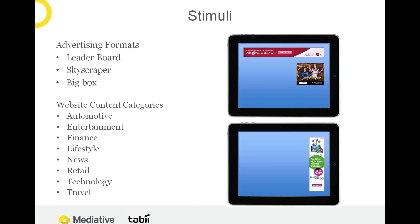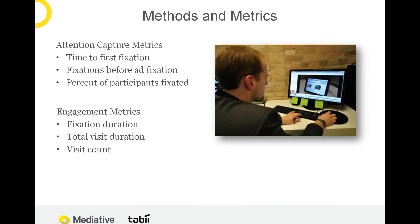To probe potential effects of the website context in which ads were encountered, we selected sites from eight different content categories or verticals, ranging from entertainment to news and retail. With regard to methods and metrics, the key questions involve understanding the looking behavior of participants viewing sites containing ads in the target formats — specifically, quantifying gaze behaviors that provide insight into the power of ads to capture visual attention. Metrics such as time to first fixation and percent of participants fixated tell us about the rapidity and completeness of attention capture. To measure the ability of ads to engage both visually and cognitively, we gathered engagement metrics such as view counts and durations.